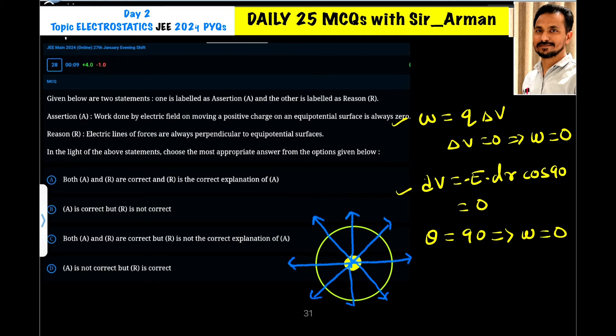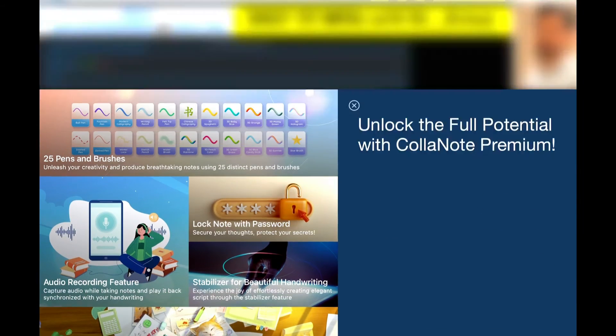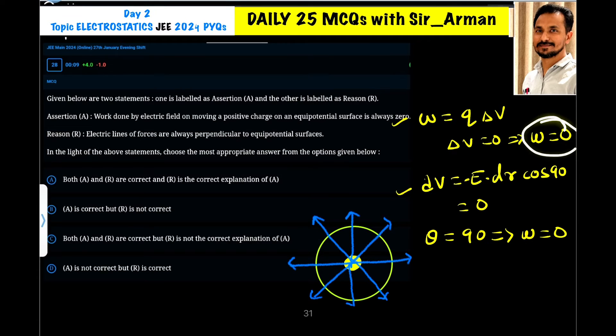For equipotential surface, the potential at all the point is same. That is, the potential difference is zero. Then work done Q delta V will also be zero because potential difference is zero. So the assertion is correct.